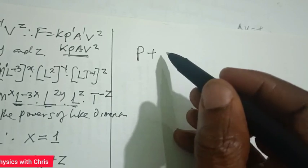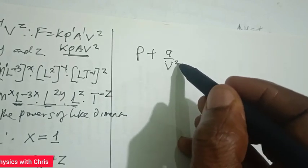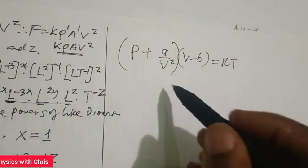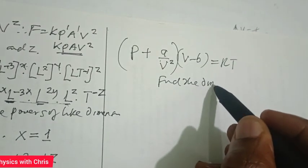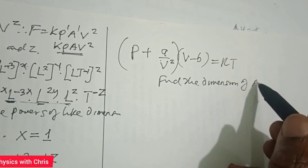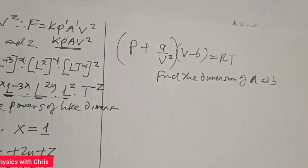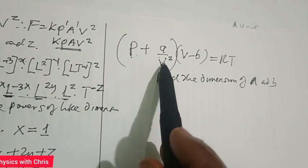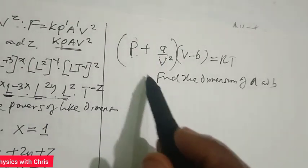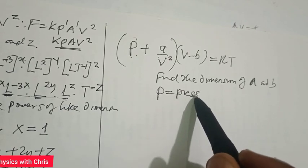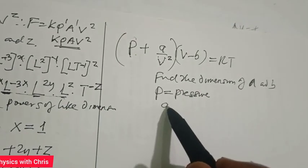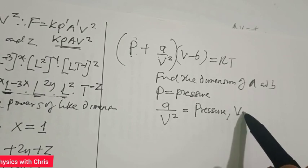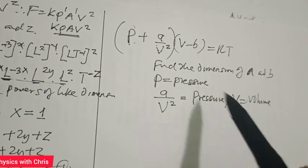Now, suppose we are given the equation for an ideal gas: (P + A/V²)(V − B) = RT, and asked to find the dimensions of constants A and B. Using dimensional analysis, the rule is that for two quantities to be added, they must have the same dimensions. Since P stands for pressure, A/V² must have the same dimension as pressure, and V here is volume.